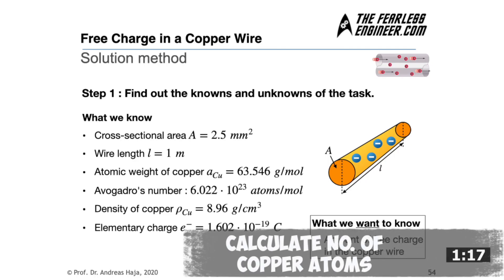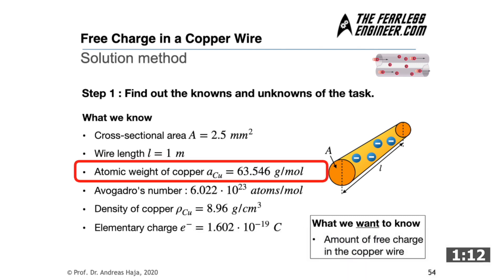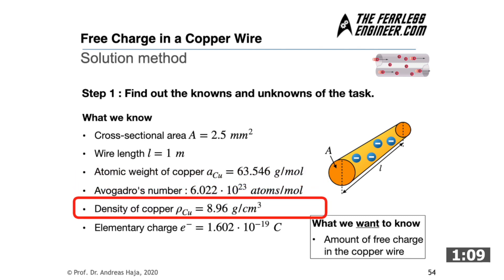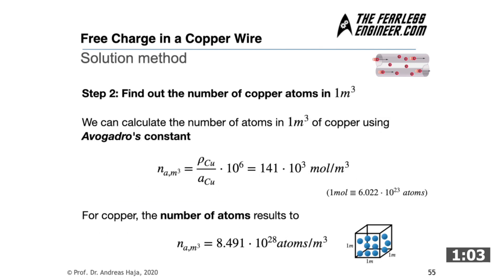When we take a look at the list of given quantities we can find two which are related by the units. It's the atomic weight at 63.546 grams per mole and the density at 8.96 grams per cubic centimeters. And in both quantities the unit gram can be found. And when we divide the density by the atomic weight we have a result with a unit mole per cubic centimeter. And in order to convert from cubic centimeter to cubic meter we also have to multiply by 10 to the power of 6, which gives us 141 times 10 to the power of 3 mole per cubic meter which is about 8.49 times 10 to the power of 28 copper atoms which exist in one cubic meter of copper.